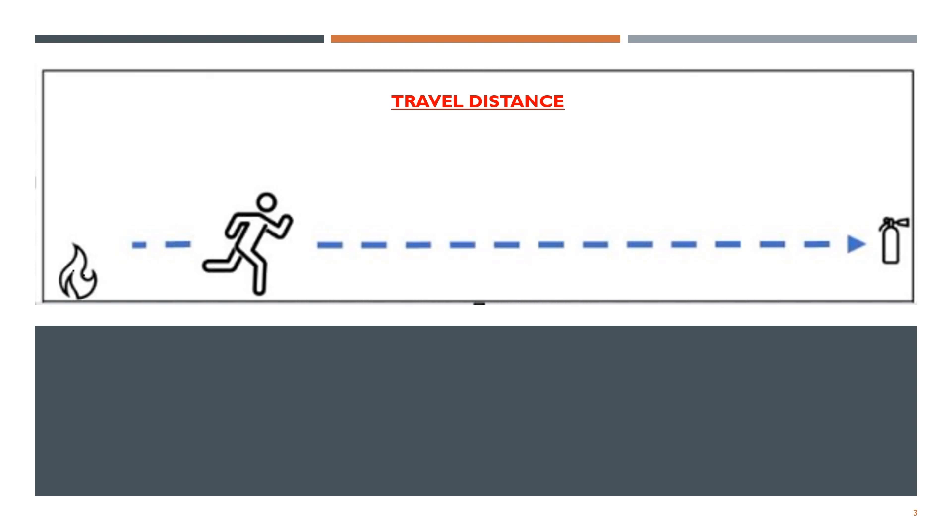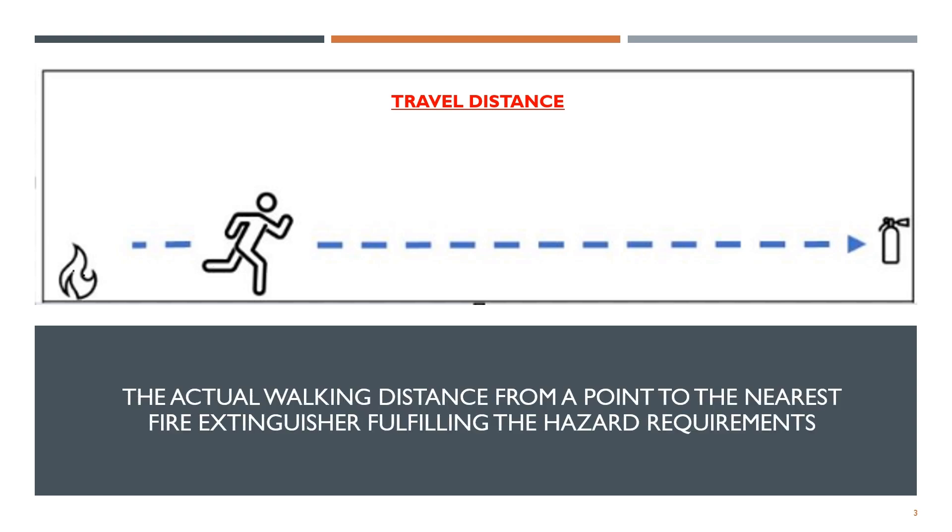So as you can see on your screen, you have a person running towards the fire extinguisher from a particular point. So the travel distance as per NFPA 10 is nothing but the actual walking distance from a point to the nearest fire extinguisher fulfilling the hazard requirements. So our location requirement will depend upon the travel distance only. So you need to know the travel distance definition.